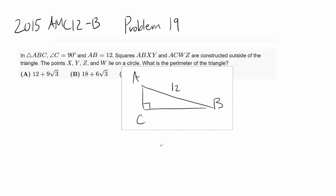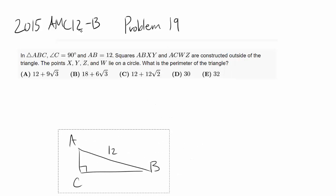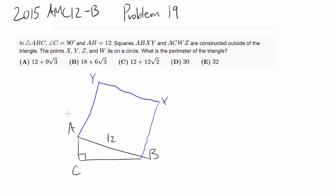So let's erase this, copy this. Let's go down a bit and we can draw a square ABXY. So ABXY and ACWZ and ACWZ like this. ACWZ.